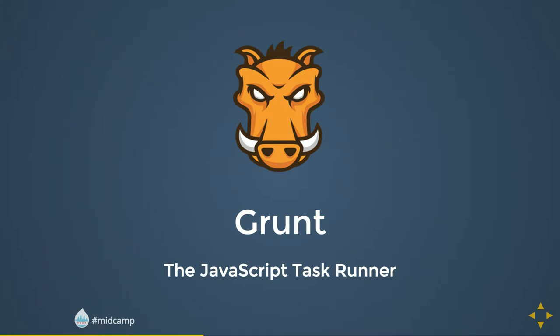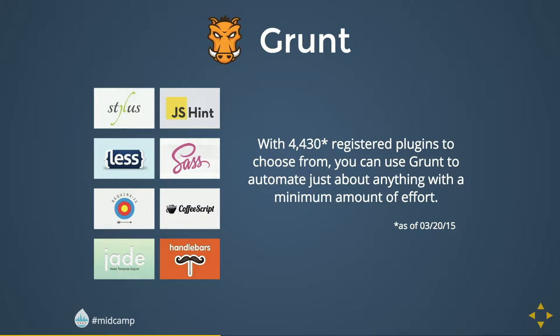Why use a task runner? In one word: automation. The less work you have to do when performing tasks like minification, compilation, unit testing, and linting, the easier our job becomes. After you've configured it, you really don't have to go back too often. Grunt has a lot of options — both a plus and a negative. It has a larger community than Gulp, and as of yesterday, four thousand four hundred and thirty registered plugins. It can automate just about anything.